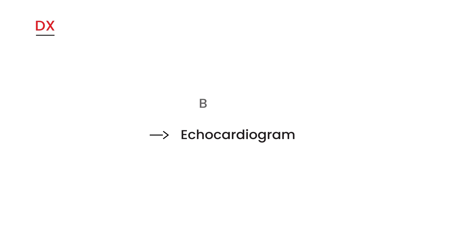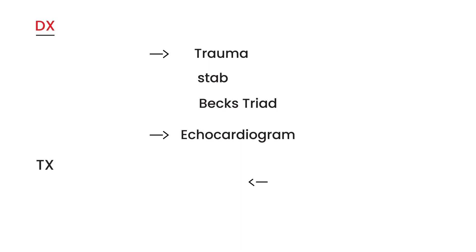For diagnosis: if somebody has any history and presentation suspicious for cardiac tamponade, do an echocardiogram. Beyond Beck's triad, the history will most likely involve some sort of trauma, because you need significant force for blood to accumulate in the pericardial space — usually a stab wound. For treatment, you must insert a needle and aspirate — take the fluid out. That procedure is known as pericardiocentesis, where you insert the needle and withdraw the blood and fluid from the pericardial sac.